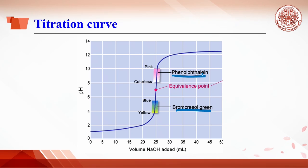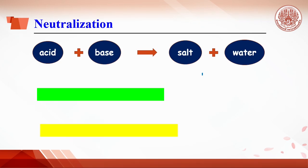However, phenolphthalein is preferable because the color change is more obvious — going from colorless to pink. When a strong acid and strong base react, salt and water are produced, and the pH of the solution is neutral. So, this chemical reaction is called neutralization.